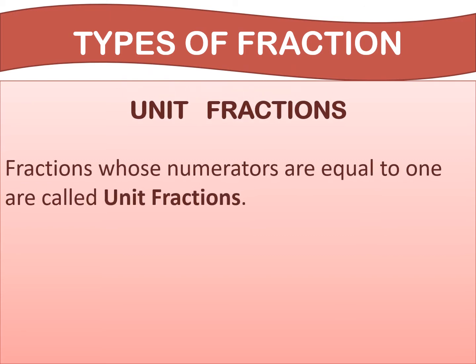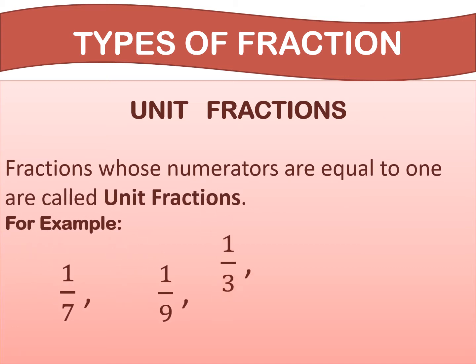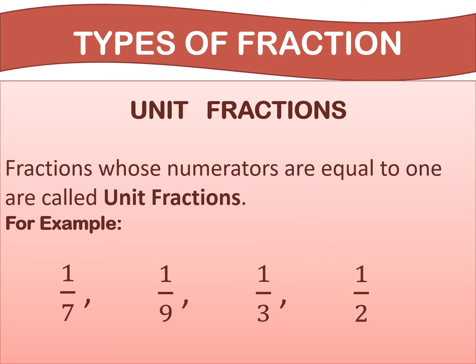The next topic is unit fractions. Fractions whose numerators are equal to 1 are called unit fractions. For example, 1 upon 7, 1 upon 9, 1 upon 3, and 1 upon 2. In these examples, all the numerators are 1, so they are examples of unit fractions.